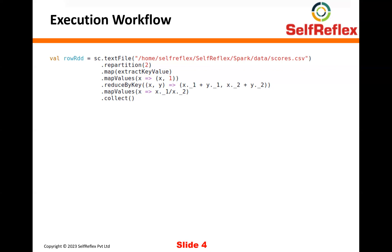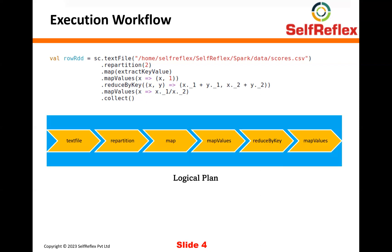Now let's see what exactly Spark does when you write this code in your driver program. The first thing Spark needs to do is come up with a logical plan to execute this code. The logical plan is nothing but a sequence of steps that Spark needs to perform: text file, repartition, map, map values, reduce by key, and map values again. Because Spark is a distributed processing framework, it will try to execute some of these steps in parallel wherever possible.